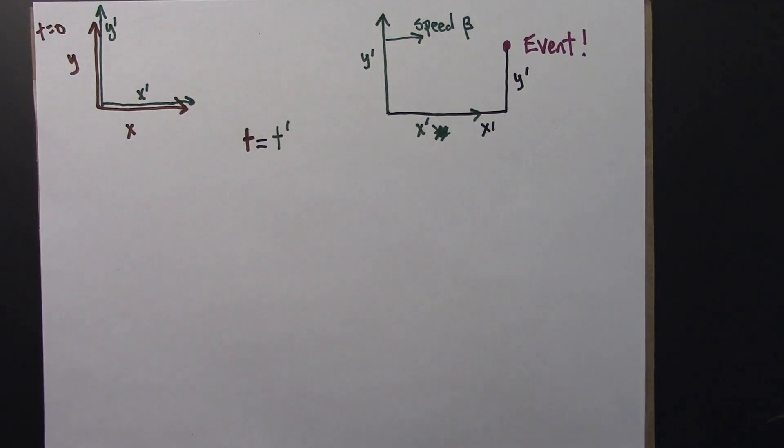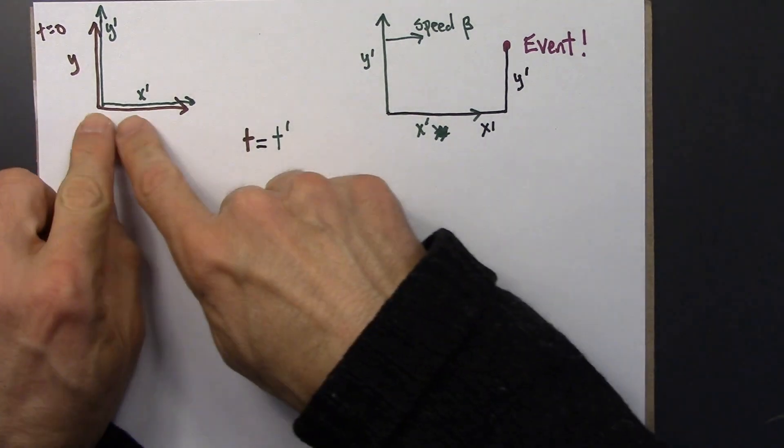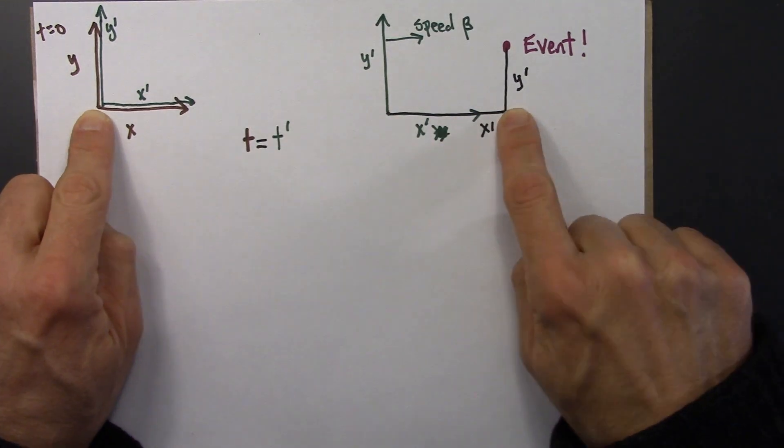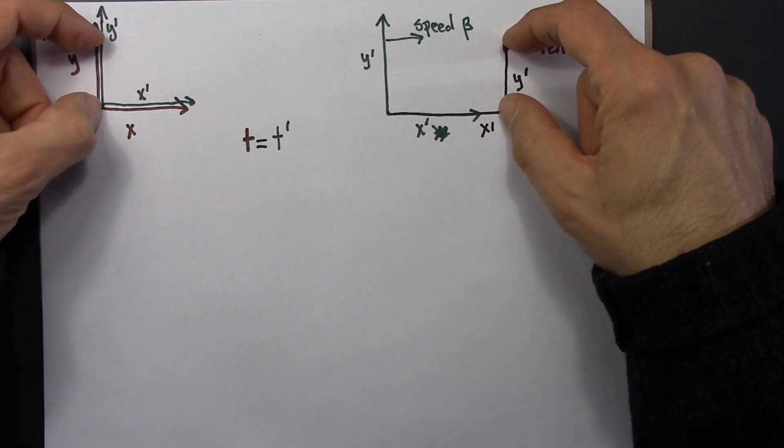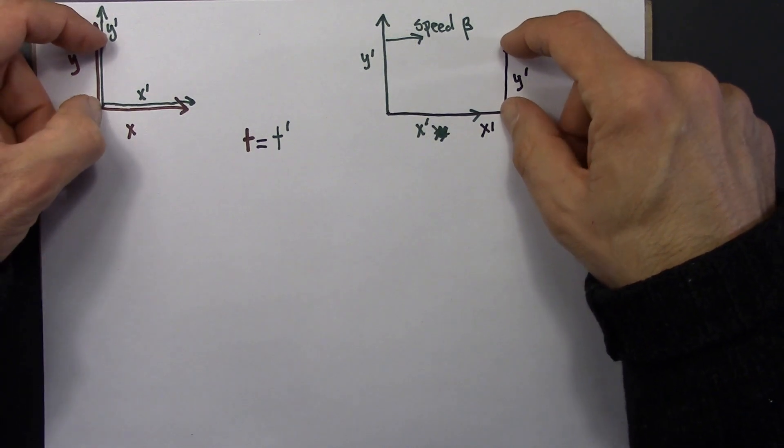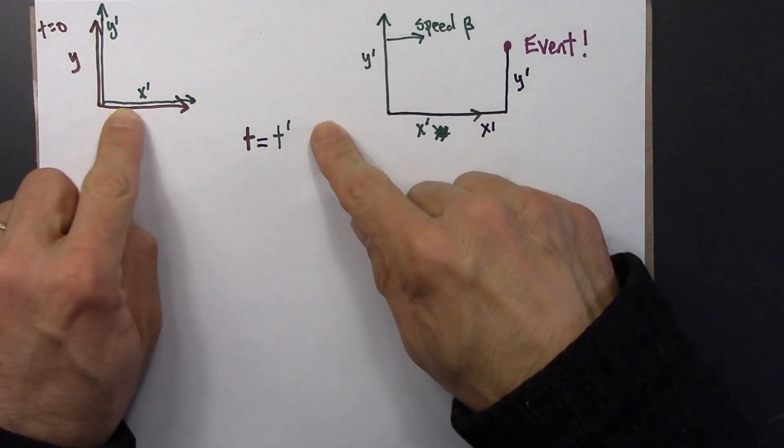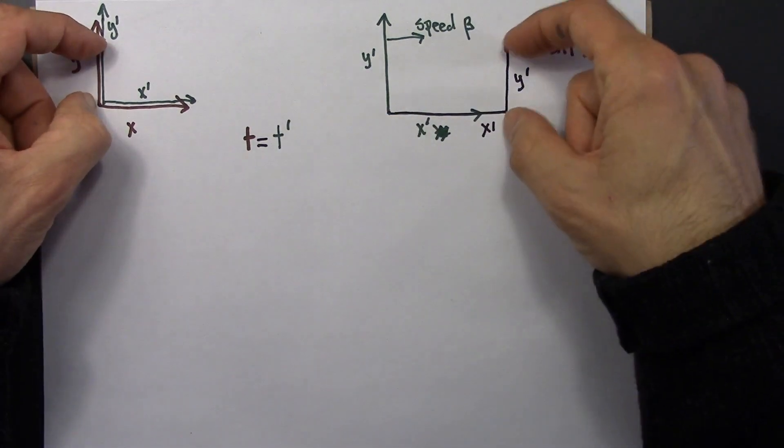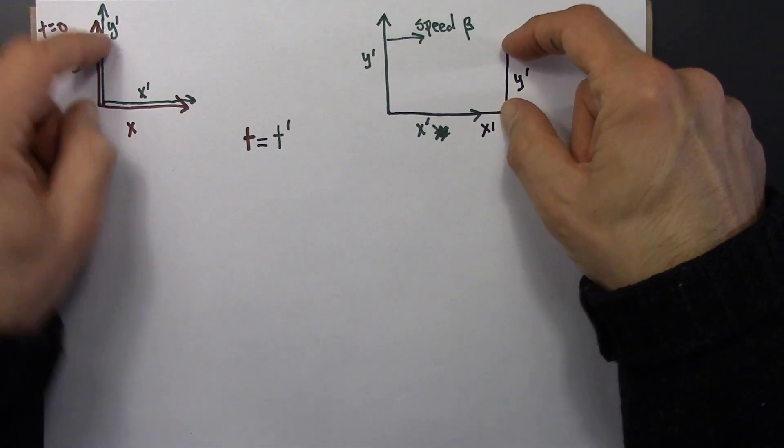And then for the brown frame, that x coordinate is going to be all the way here. It's farther away. But their y coordinates are going to be the same. So both these two observers, these two reference frames, have the same value for the y, for the height of this.